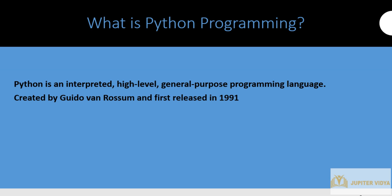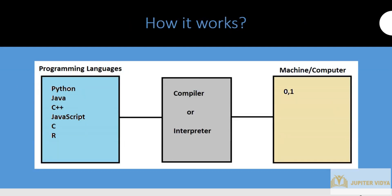Python is very popular in data science, machine learning, and artificial intelligence, and there are so many applications built on it. Now let's understand how it works. We write code in a language we understand, but to communicate with the machine we need a programming language. The problem is the machine can only understand binary — 0 and 1 — and we cannot write code in 0 and 1. So we use a programming language like Python, Java, C++, or JavaScript.